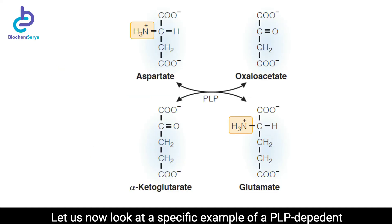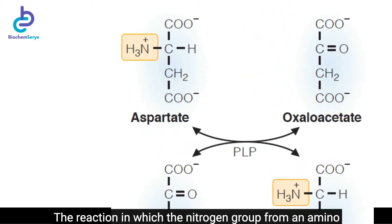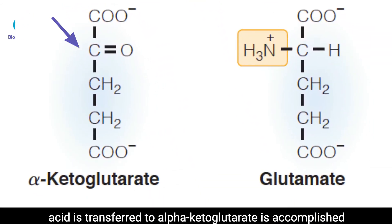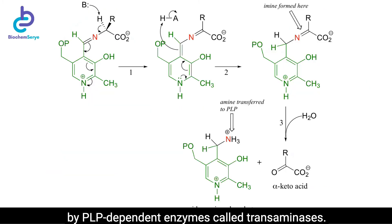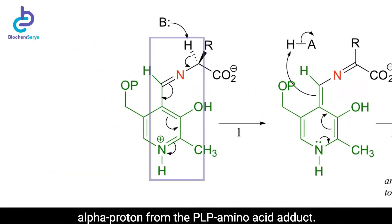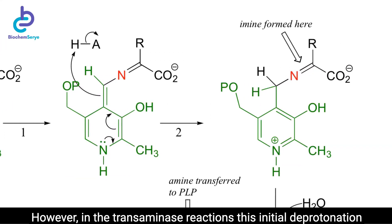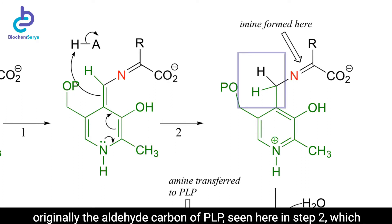Let us now look at a specific example of a PLP-dependent reaction — a very common one — a transamination reaction. The reaction in which the nitrogen group from an amino acid is transferred to alpha-ketoglutarate is accomplished by PLP-dependent enzymes called transaminases. The first step is abstraction of the alpha proton from the PLP-amino acid adduct. However, in the transaminase reactions, this initial deprotonation step is immediately followed by reprotonation at what was originally the aldehyde carbon of PLP.